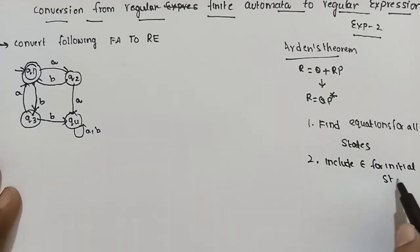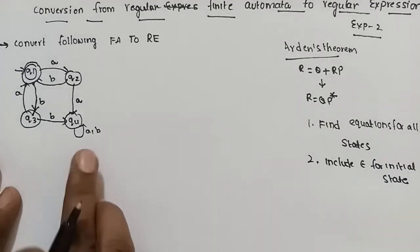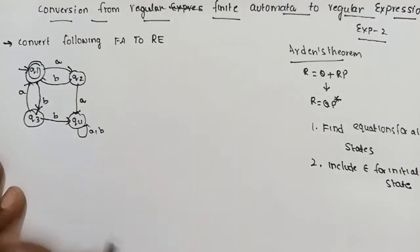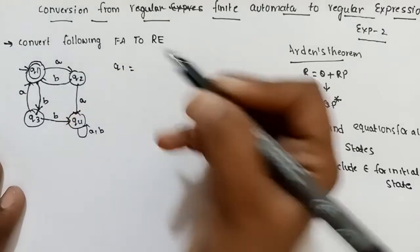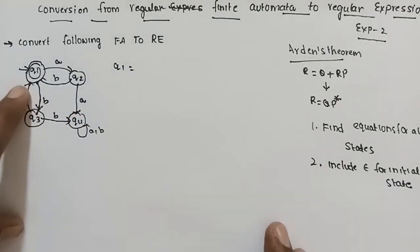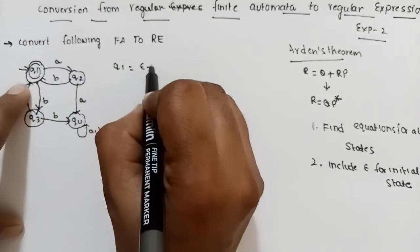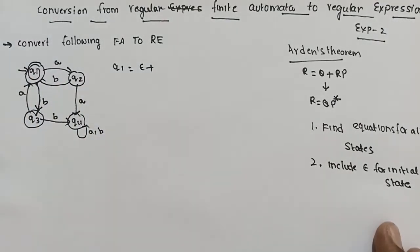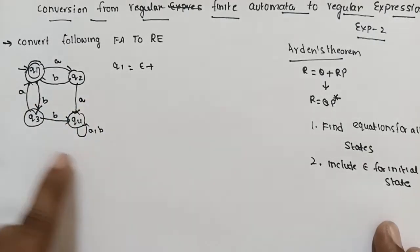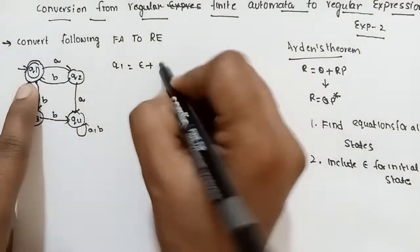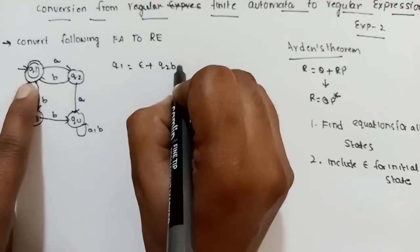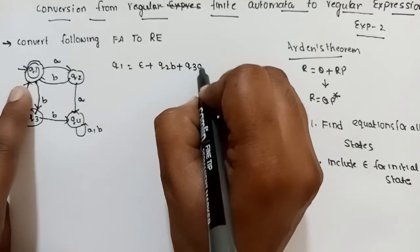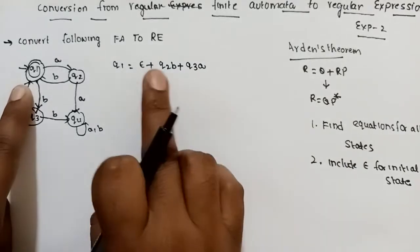The first state is Q1. In the initial state, epsilon is included. In Q1, there are incoming edges: Q2 on B plus Q3 on A. So Q1 equals epsilon plus Q2·B plus Q3·A.